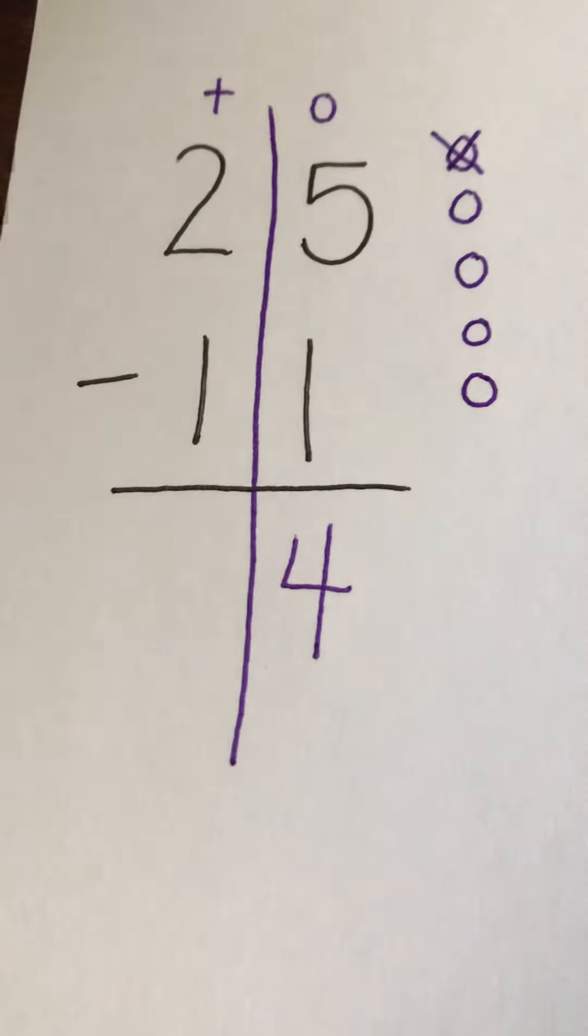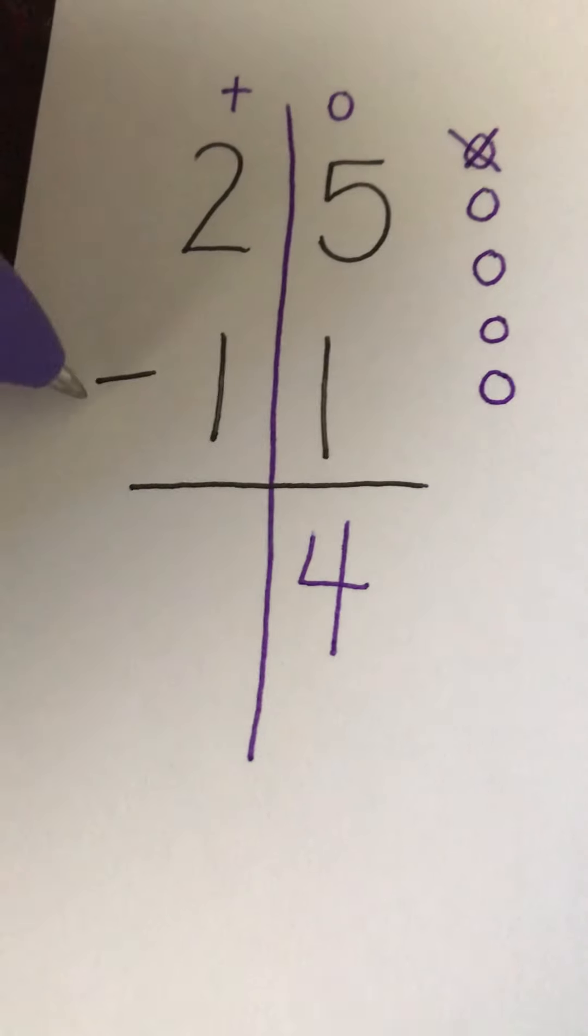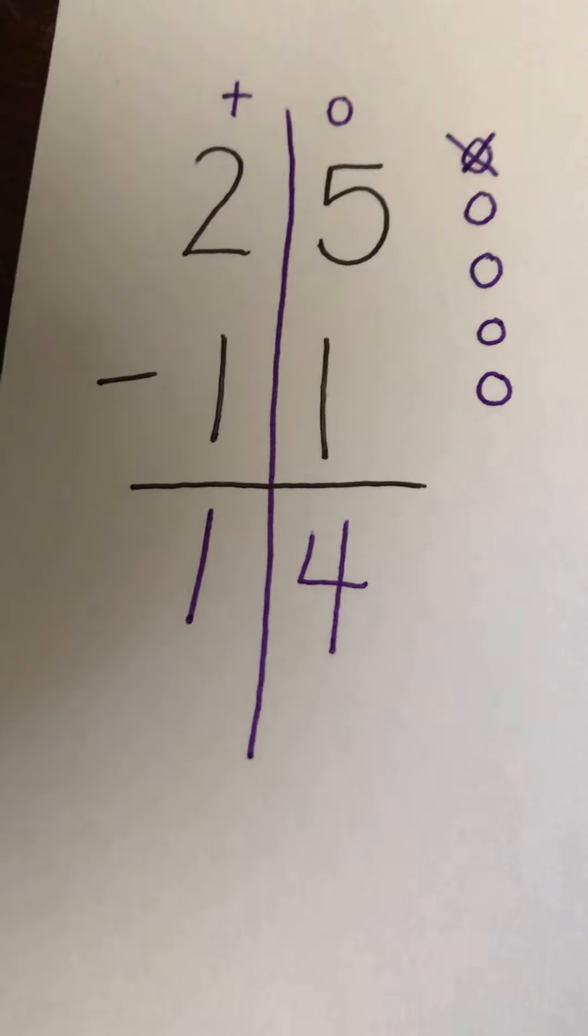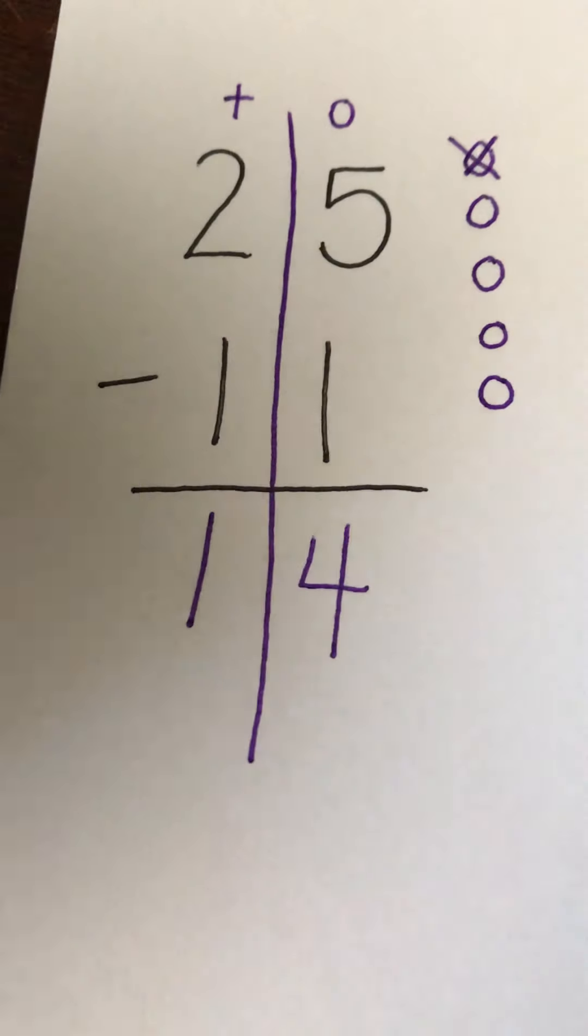Then I'm going to move over to my tens place and I'm going to do two minus one. Two minus one equals one. So 25 minus 11 equals 14.